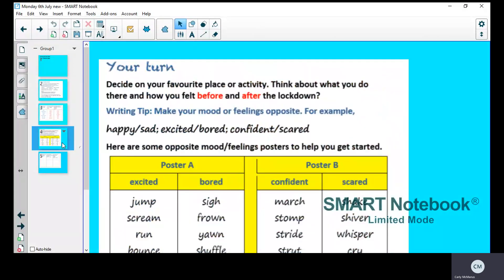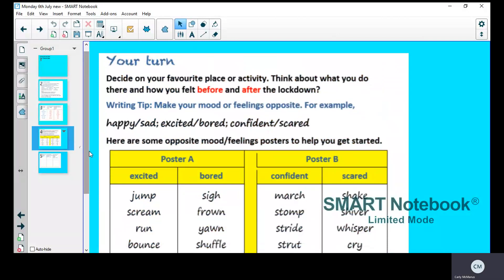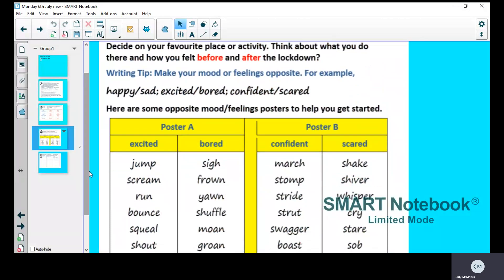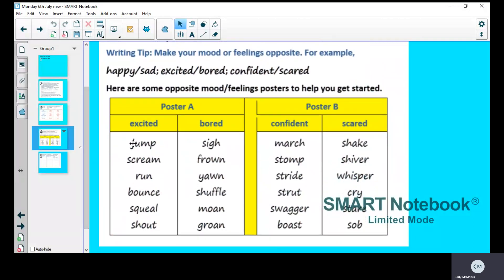Now I'm just going to show you another thing. Here, I haven't chosen happy or sad. I've chosen excited and bored. So they're opposite moods. So a place that you visited before lockdown might have been an exciting place. And then afterwards, during lockdown, it might turn into a boring place. So some exciting verbs are jump, scream, run, bounce, squeal, shout. And some bored ones might be sigh, frown, yawn, shuffle, moan, groan.